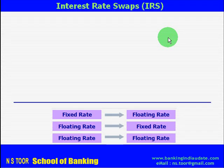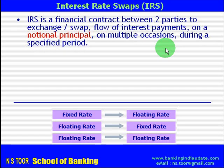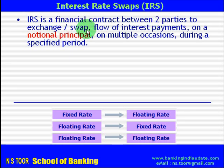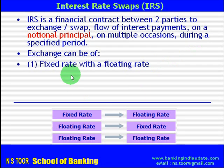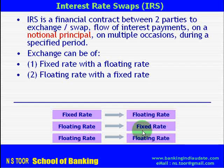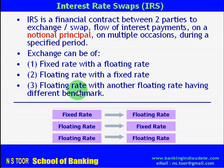An interest rate swap is a financial contract, a financial agreement between two parties. As per that agreement, they agree to exchange or swap flow of interest payments on a notional principal. This exchange will be on multiple occasions during a particular period. The exchange of interest payments can be of fixed rate with a floating rate, floating rate with a fixed rate, or one floating rate with another floating rate but both having different benchmarks.